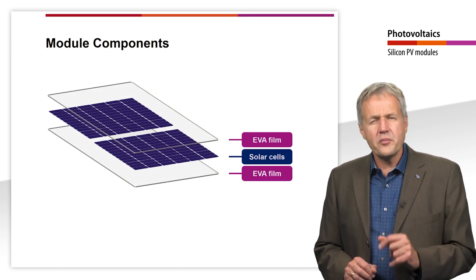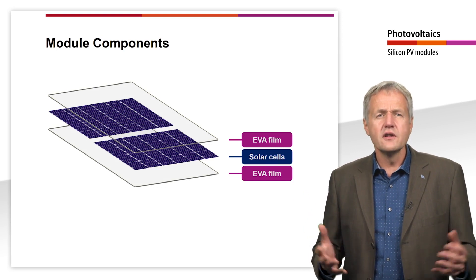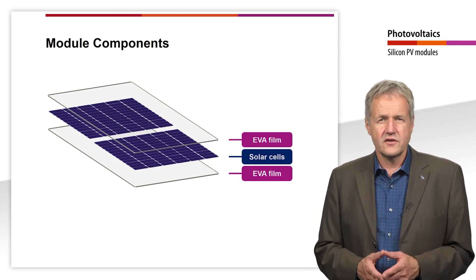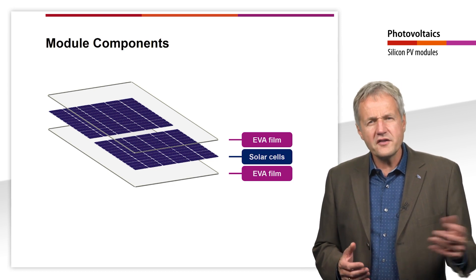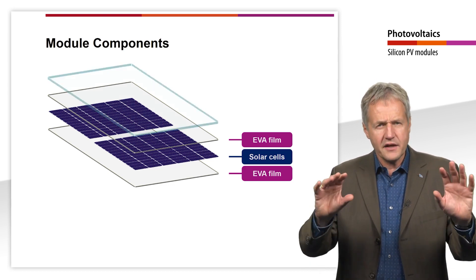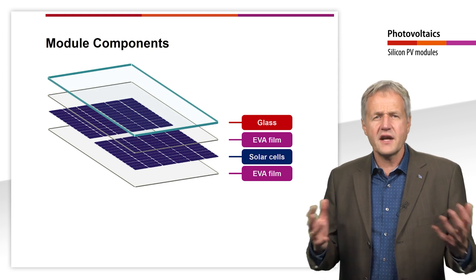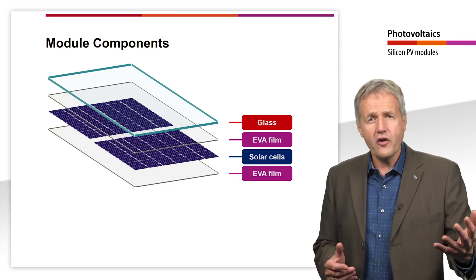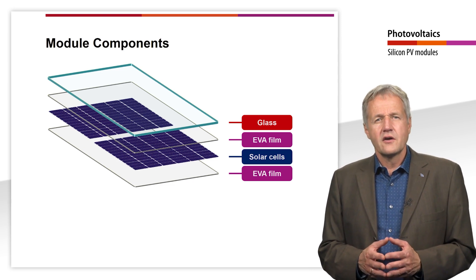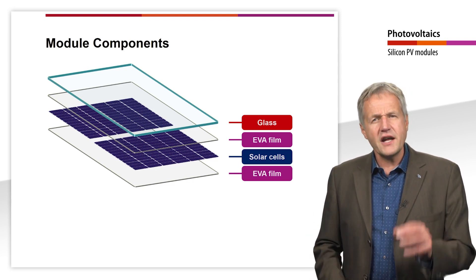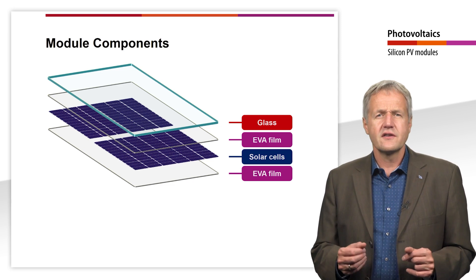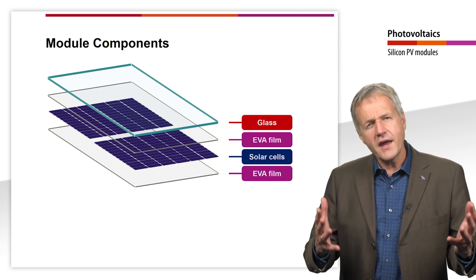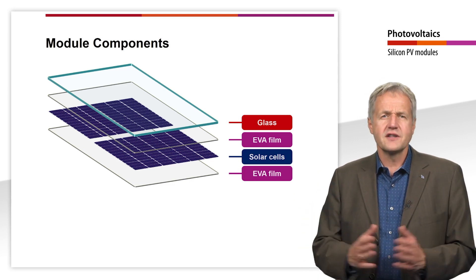For this purpose, usually ethylene vinyl acetate, also called EVA, is used. On the front side, the module ends with the glass pane. The glass pane protects the module from moisture, dust, rain, snow, but also from hail. For photovoltaic modules, special solar glass is used that contains less iron than normal window glass, making it even more transparent to incident light.